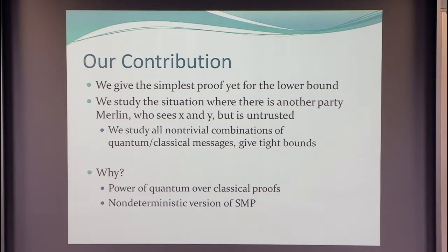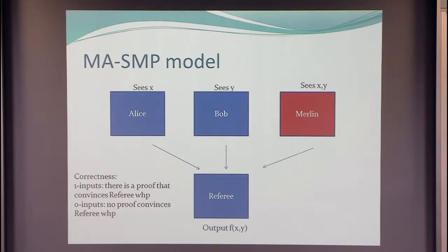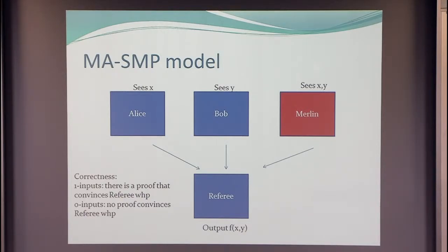Why do we do that? First, we're interested in the power of quantum proofs over classical proofs, and there's going to be something rather nice happening here. Secondly, it's natural to look at the non-deterministic version of the simultaneous message passing model. So: Alice sees X, Bob sees Y, Merlin — this untrusted guy — sees both inputs and sends to the referee. The referee produces the output, and you have the usual soundness and completeness conditions.